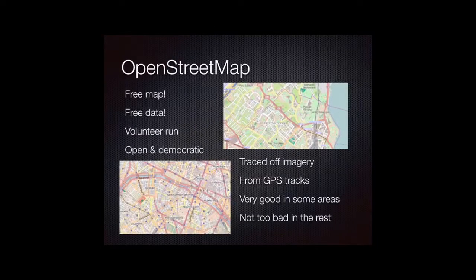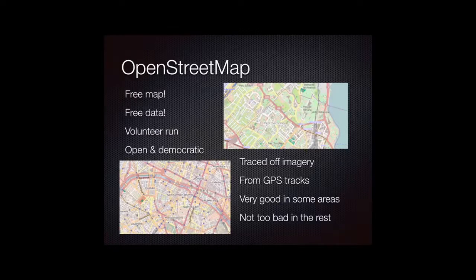OpenStreetMap is an online map — you can go to OpenStreetMap.org and look at the map — but it's also free data. It's a volunteer-run organization where people contribute data either by tracing it off of imagery or actually going out by car or bike, collecting a GPS track, and contributing that back to the map. For a lot of my users it's a great source of data because it's free and it's improving all the time. For most areas it's pretty good, and for some areas it's really quite good.